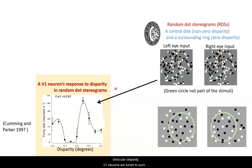V1 neurons are tuned to such a disparity so that, for example, this neuron responds more to its preferred disparity at around 0.1 degree of visual angle.